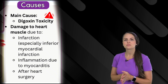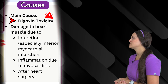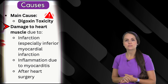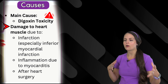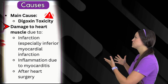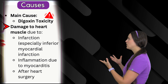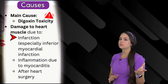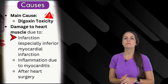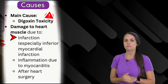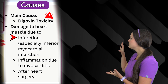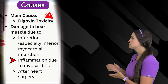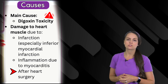Now what can cause this rhythm? The main cause is digoxin toxicity. However, it can also occur if we have damage to our heart muscle — specifically to the electrical structures. Decreasing blood flow to these structures can cause this, especially in a myocardial infarction with an inferior infarction, or if we have inflammation of the myocardium like myocarditis, or if the patient has had cardiac surgery.